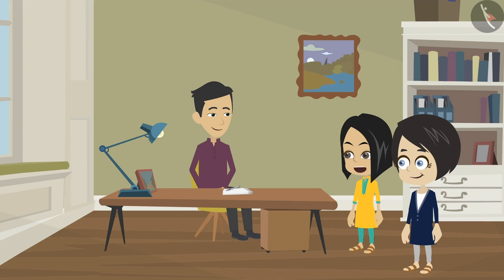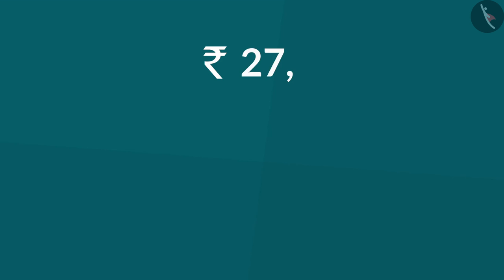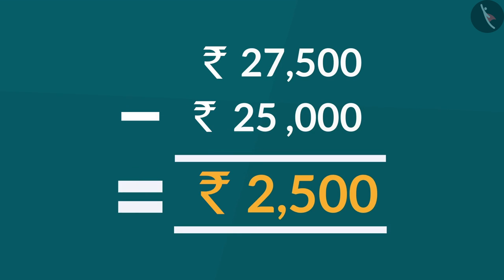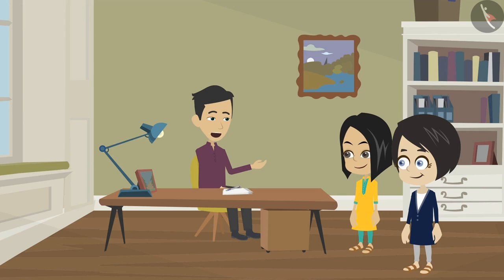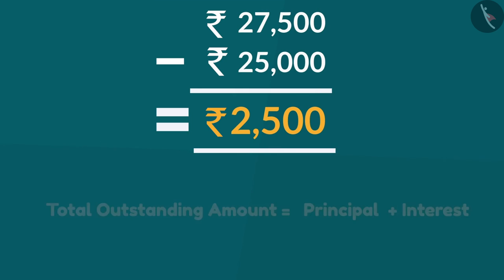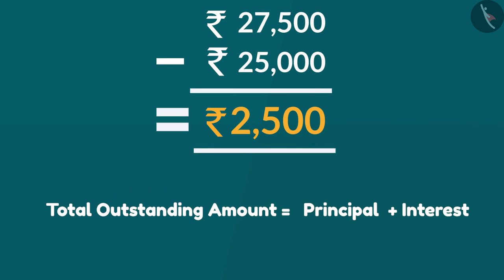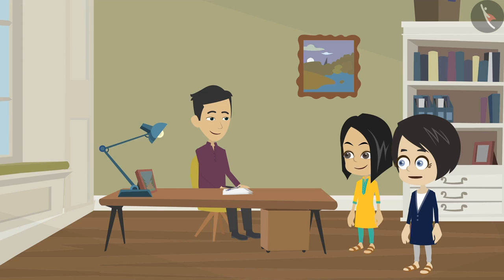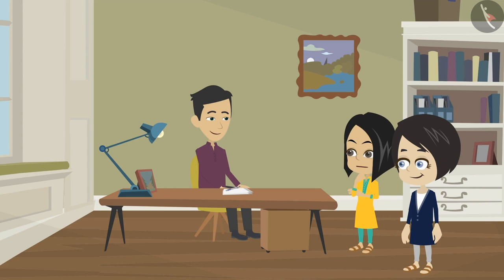27,500 minus 25,000 is equal to 2,500. That means the interest is only 2,500 rupees, because the total outstanding amount is principal plus interest. Okay uncle, I was thinking that the bank will take more amount than the principal from us.